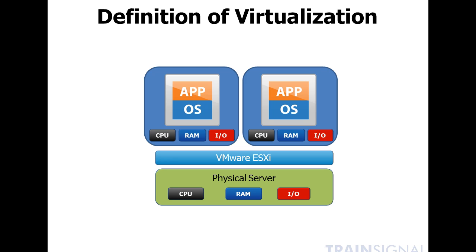At the bottom layer here, you've got the physical server. Each physical server has its own CPU, RAM, and IO devices like network cards and storage HBAs. On top of that physical server, let's say you chose VMware ESXi, the vSphere hypervisor — though you could also choose Hyper-V or Citrix XenServer. You create this hypervisor layer that installs on the physical server. On top of that you've got the containers — the virtual machines — and each one has its own virtual CPU, virtual RAM, virtual IO devices, virtual network interface cards, and virtual storage adapters. Then you install the operating system and applications on top of that.